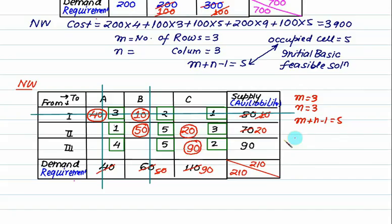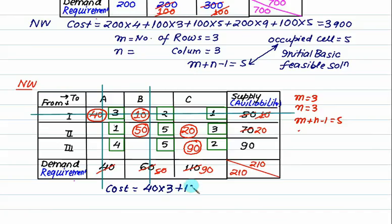Cost does not matter for feasibility. The cost calculation: 40 items shifted at rate 3, 10 items at rate 2, 50 items at rate 5, 20 items at rate 3, and 90 items at rate 2.